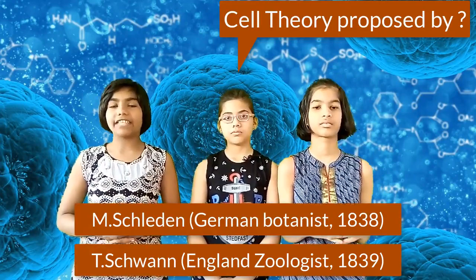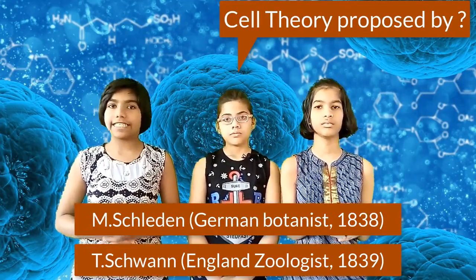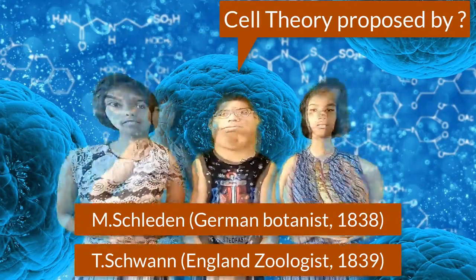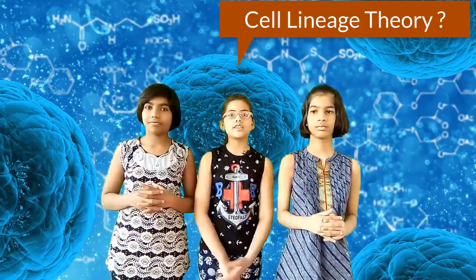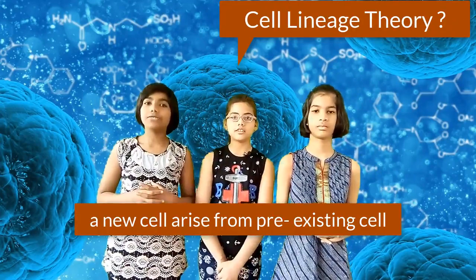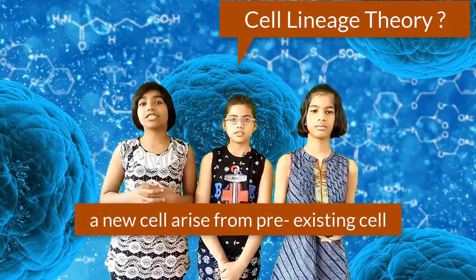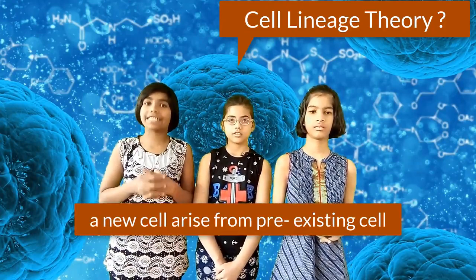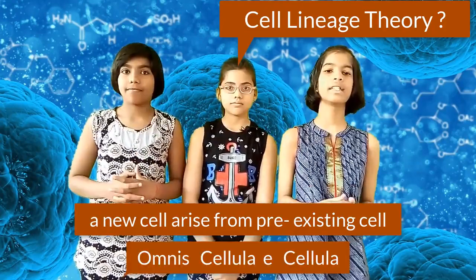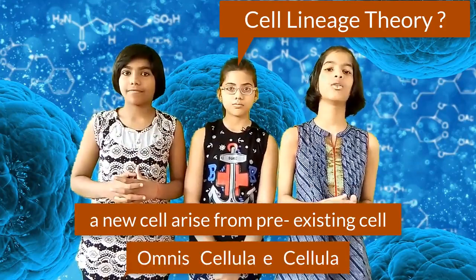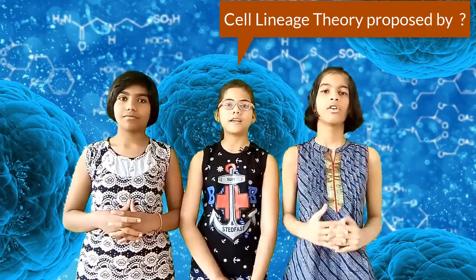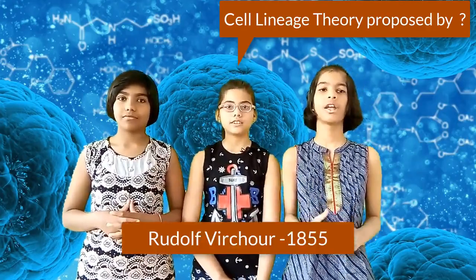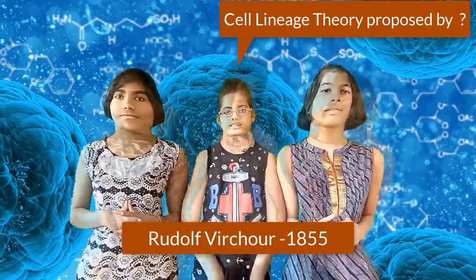T. Schwann, an English zoologist, proposed cell theory in 1839. The cell lineage theory states that a new cell arises from pre-existing cells — 'Omnis cellula e cellula.' This theory was proposed by Rudolf Virchow in 1855.